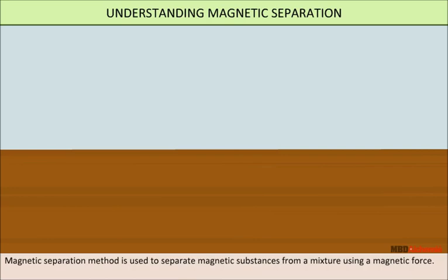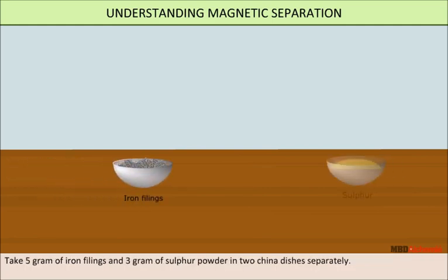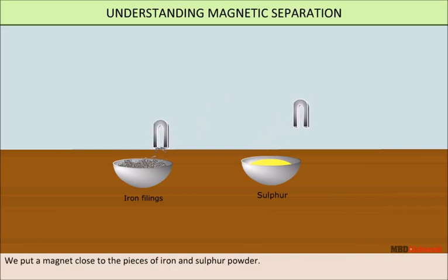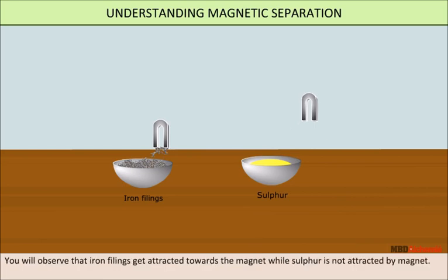Magnetic separation is used to separate magnetic substances from a mixture using a magnetic force. Take five grams of iron filings and three grams of sulfur powder in two china dishes separately. Put a magnet close to the iron filings and sulfur powder. You will observe that iron filings get attracted towards the magnet, while sulfur is not attracted by the magnet.